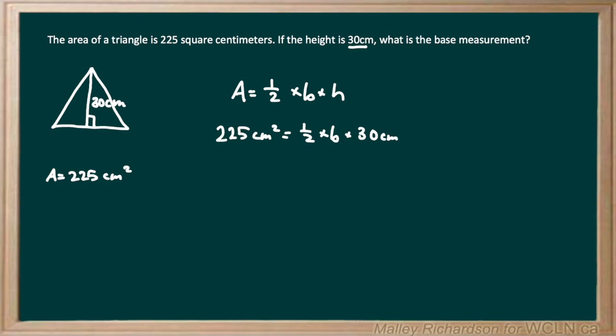Now all we have to do is solve for our base. So we're gonna have 225 centimeters squared equals 30 centimeters times 1 half, which is 15 centimeters, times our base.